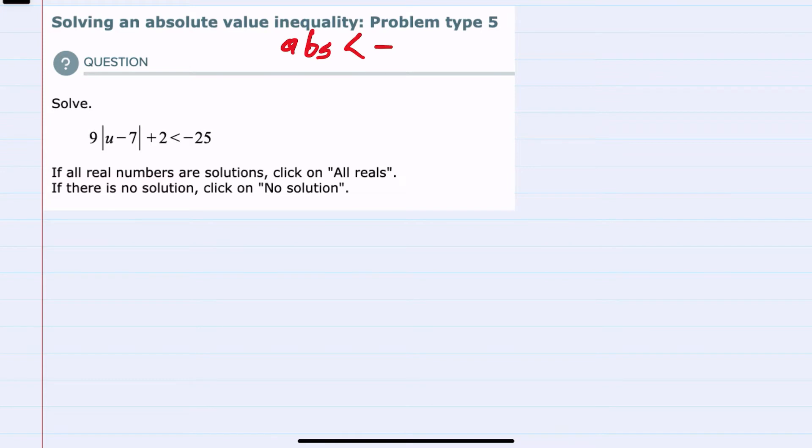If, as we start to solve, we end up with the absolute value on one side being less than a negative, this would be our no solution possibility, and no solution because the absolute value is always going to be positive, so it couldn't be less than a negative number.